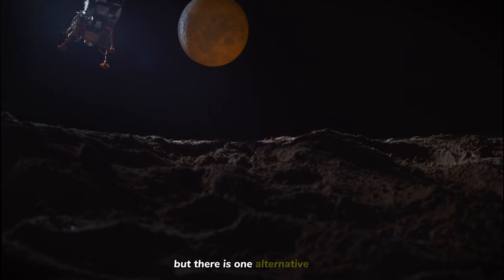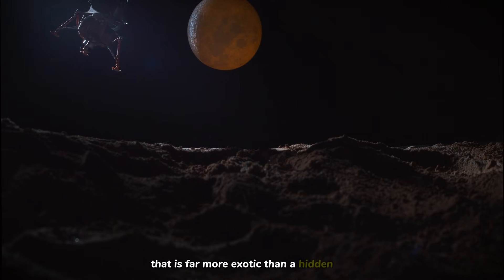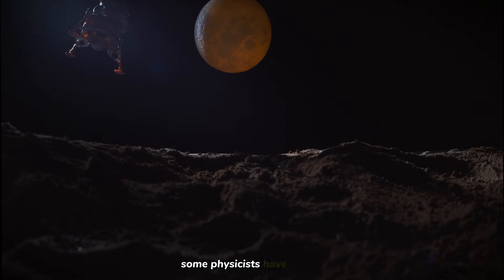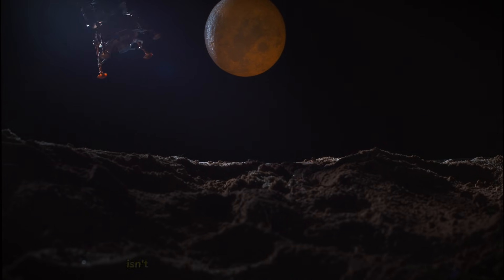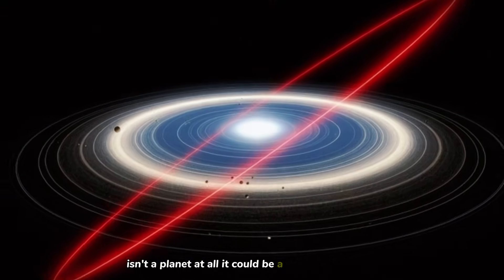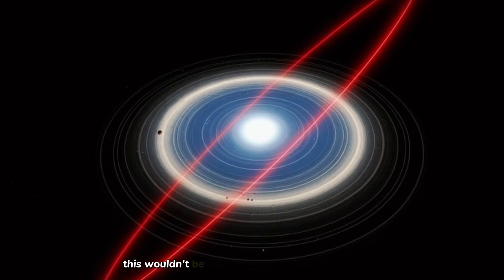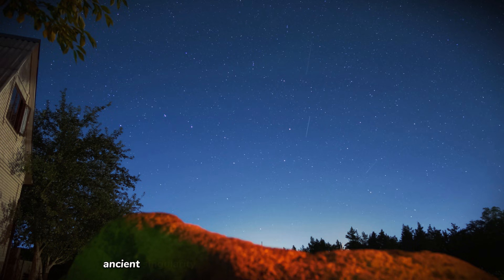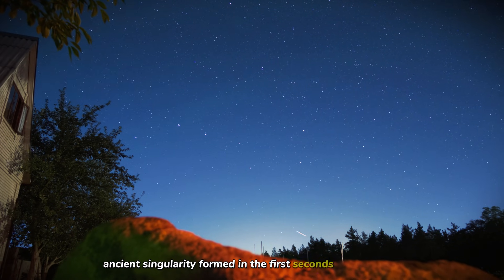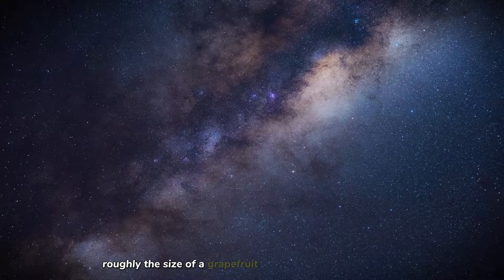But there is one alternative theory that is far more exotic than a hidden planet. Some physicists have proposed that the object causing these gravitational anomalies isn't a planet at all. It could be a primordial black hole. This wouldn't be a black hole formed from a dying star. This would be a tiny, ancient singularity formed in the first seconds of the Big Bang. Roughly the size of a grapefruit, but with the mass of ten Earths.